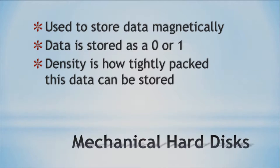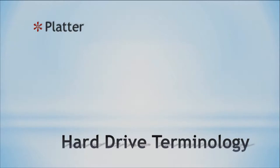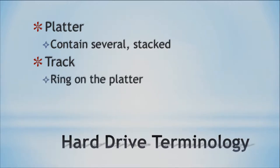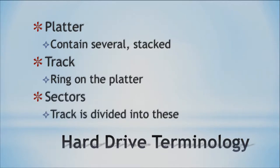Looking at hard drives, it's important to understand certain terminology. The first component is the platter. Within a hard drive, there are several platters and they are stacked vertically. We also have a track, which is basically a circular ring on the platter. Then we have sectors — sectors are what tracks are divided into. So the platter is the big picture, the track focuses in more, and a sector is part of a track — getting more specific as we move in.